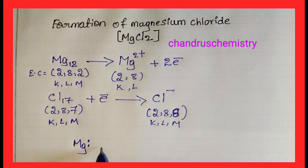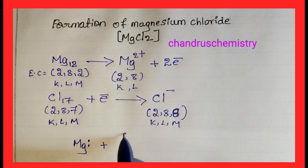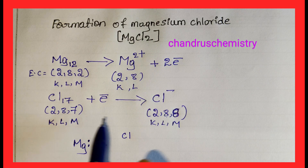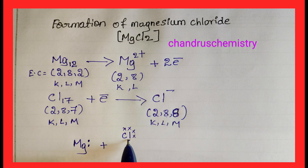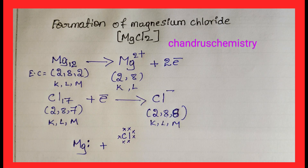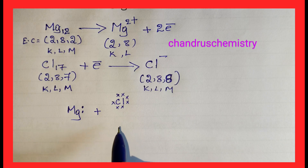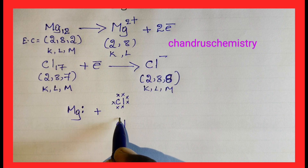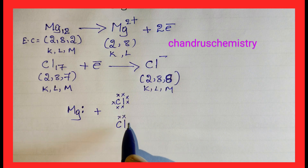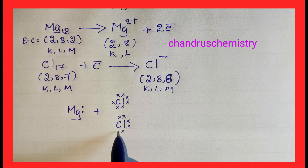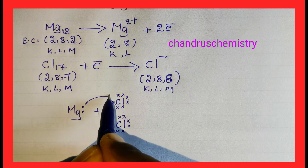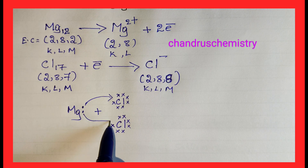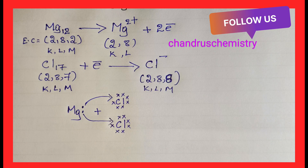Now let's draw the dot structure. Magnesium has 2 valence electrons in its outermost shell, shown as 2 dots. Each Chlorine atom contains 7 valence electrons, shown as 7 dots: 1, 2, 3, 4, 5, 6, and 7. We need two Chlorine atoms, each with 7 valence electrons.